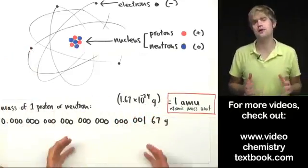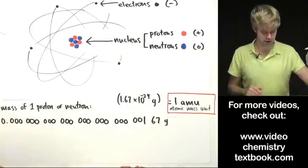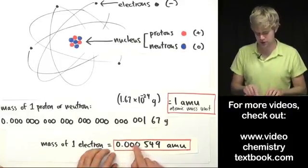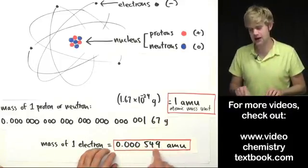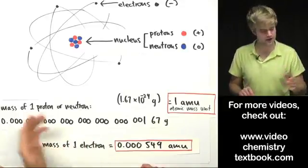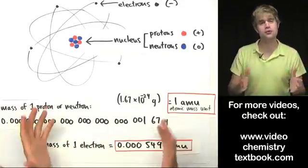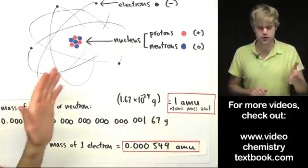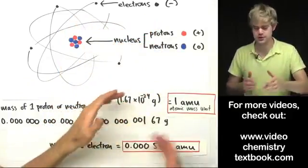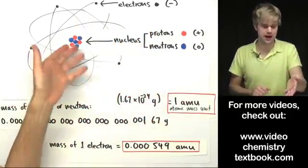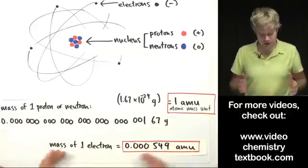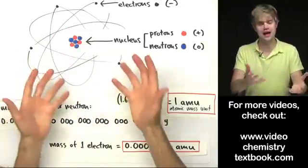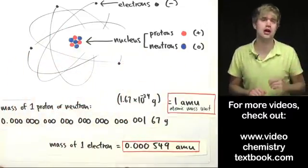An electron, on the other hand, is much, much, much smaller than a proton or neutron. It weighs only 0.000549 AMU, so a tiny fraction of how much a proton or a neutron weighs. For this reason, when we're talking about the mass of atoms, which we'll talk about later on, we usually add up the protons and neutrons to find out how many AMUs the atom weighs. And then we usually don't even worry about the electrons at all because they're so tiny. They don't really have much of an influence on how much an atom weighs.